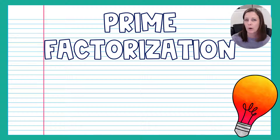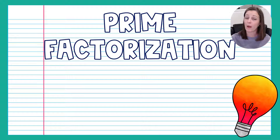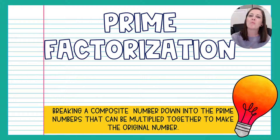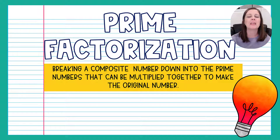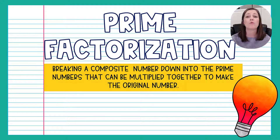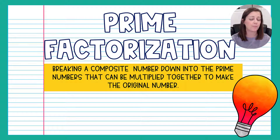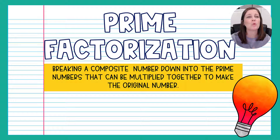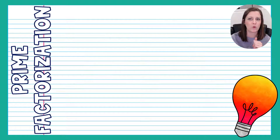What do all of those words have to do with prime factorization? Prime factorization is when we take a composite number and break it down into factors that are prime numbers. Let's look at an example to help clear it up.